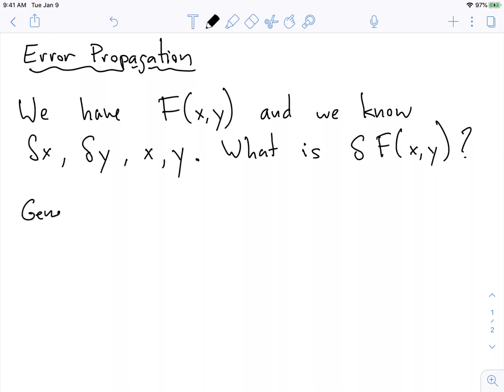So the general formula for this is the uncertainty in f of x and y squared is equal to the uncertainty in each of these terms squared.